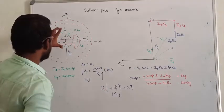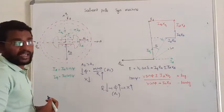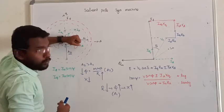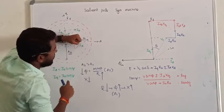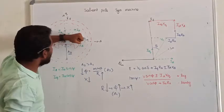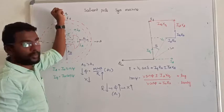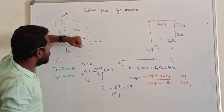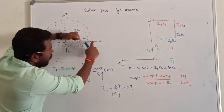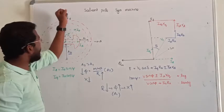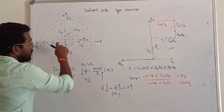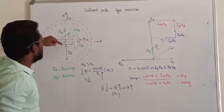So what is the conclusion? Unlike the cylindrical machine, in the salient pole type you observe there are two axes. The first one is along the pole center — that is called the direct axis. The axis 90 degrees perpendicular to the pole is called the quadrature axis. So this axis line along the pole is called direct axis, and this axis line perpendicular to it is called quadrature axis.